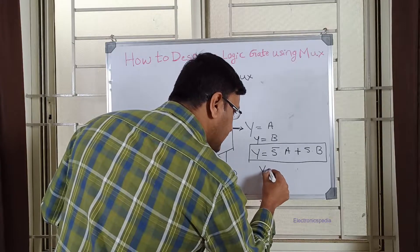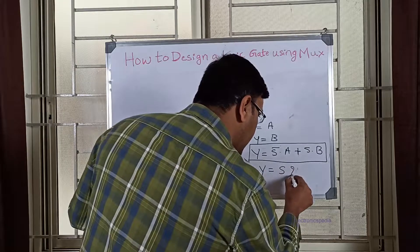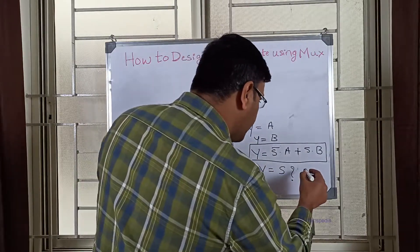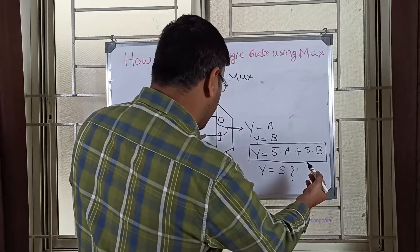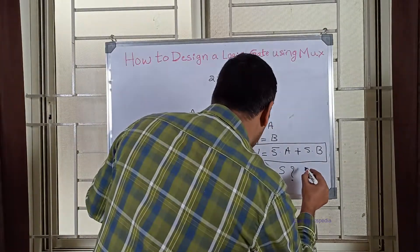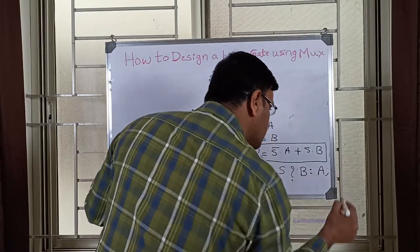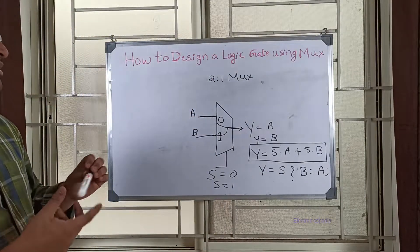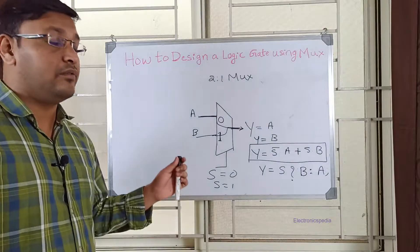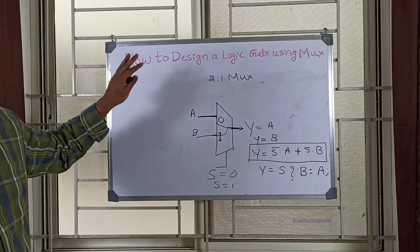If you are writing in a shorthand notation, you can write it using a ternary operator: when S equals 0, it is input A; when S equals 1, it is input B. So the equation is A-bar into A plus A into B, which simplifies. This is how you write the equation for the 2-to-1 MUX. Now when we are trying to implement any logical gate, you need to know this equation as well as the truth table of that particular gate.